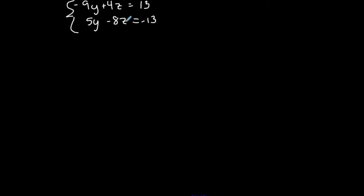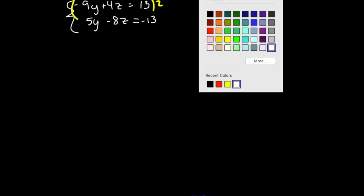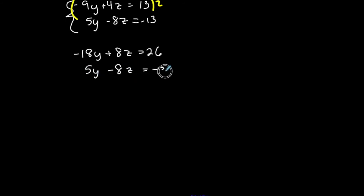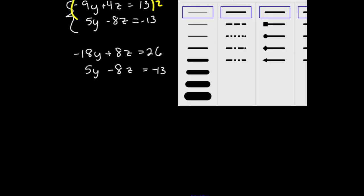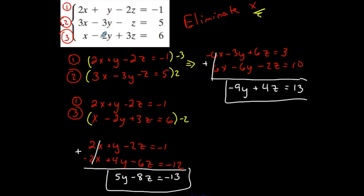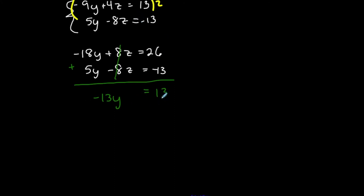Now I'll eliminate z from this two-variable system. I multiply the first equation by 2 to get matching z coefficients with opposite signs: −18y + 8z = 26 and 5y − 8z = −13. Adding them together, the z terms cancel. −18y + 5y = −13y and 26 − 13 = 13. So −13y = 13, and dividing both sides by −13 gives y = −1.